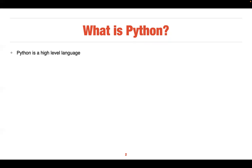Python is a high-level language. C++, Fortran, etc. are low-level languages because there are many layers in between. When you use Python it's almost like writing English, with many layers between your code and the computer's binary operations.